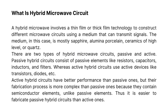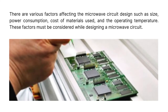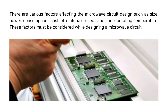What is a hybrid microwave circuit? A hybrid microwave involves thin film or thick film technology to construct different microwave circuits using a medium that can transmit signals. The medium is mostly sapphire, alumina porcelain, high-level ceramics, or quartz. There are two types of hybrid microwave circuits: passive and active. Passive hybrid circuits consist of passive elements like resistors, capacitors, inductors, and filters. Active hybrid circuits use active devices like transistors and diodes. Active hybrid circuits have better performance than passive ones, but their fabrication process is more complex because they contain semiconductor elements. There are various factors affecting microwave circuit design such as size, power consumption, cost of materials used, and the operating temperature.